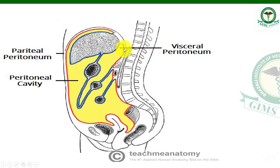Peritoneum — internal to the organ is visceral peritoneum, and parietal peritoneum is that which is attached to the outer wall — that is the full peritoneum cavity.